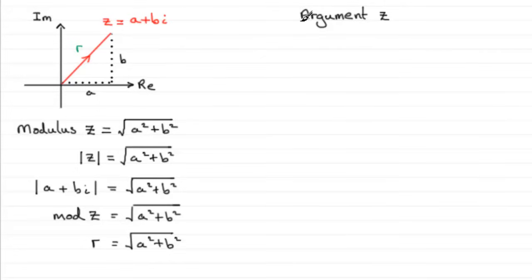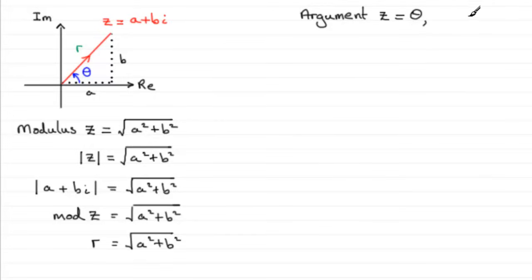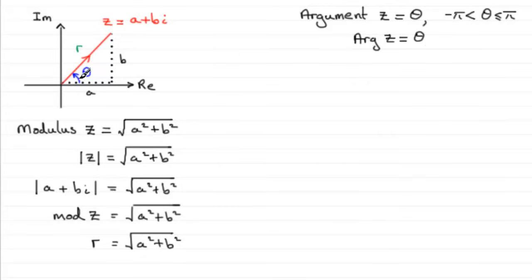What do we mean by the argument of z? Well, the argument of z is an angle — it's an angle theta. On this diagram, it's the angle made between the positive real axis and the complex number. It's normally measured in radians and is an angle between minus pi and less than or equal to pi radians. In degrees, that's greater than minus 180 degrees but less than or equal to 180 degrees, but we tend to work in radians. For short, some people call this arg z, so arg z equals this angle theta.